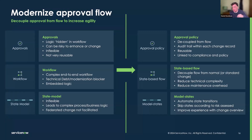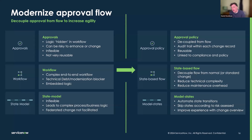By using state-based flow, we get to use approval policies at different stages of a change. We can have a set of approval policies for the assess phase that do things like peer review. Traditionally, we'd have just assigned the change to a peer who would move it forward. With approval policies, we have an actual approval in the system saying this was a technical peer review — we know what policy was applied, we know why the decision was made. Maybe we need 40% of people within the team to approve when it's a critical system, or just one person when it's non-critical.